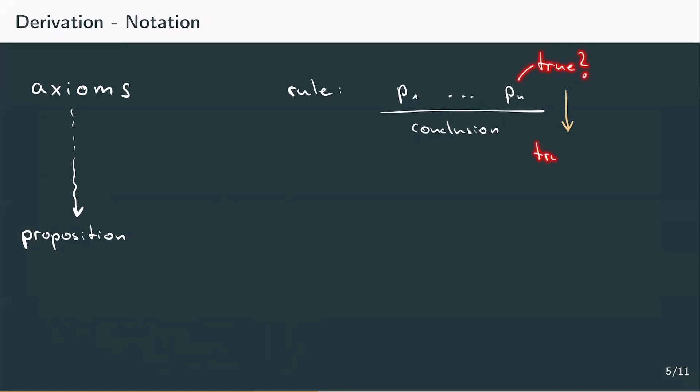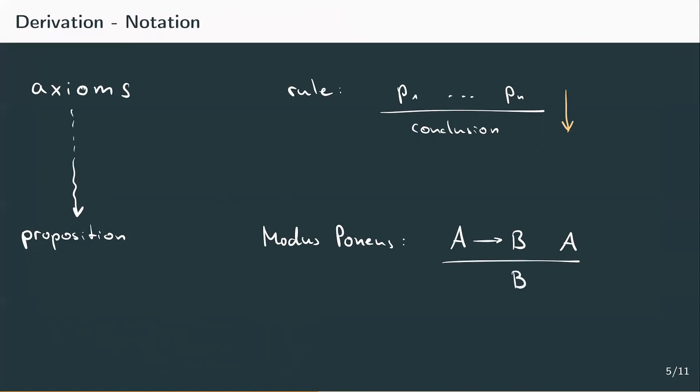An example of a common inference rule is the modus ponens of propositional logic. It has two premises: one is the implication 'if A then B', and the other is just A. The conclusion is B. Modus ponens says: if A holds, and from A follows B, then B holds. A derivation is a sequence of applying inference rules starting from some axioms. But normally we don't start with ground truths but with a conclusion, and we want to find the derivation that proves the proposition — so we write whatever we want to prove at the bottom and go backwards, hopefully reaching axioms at the top.